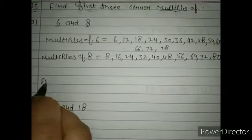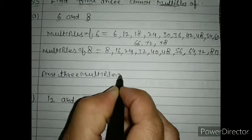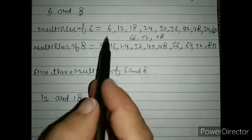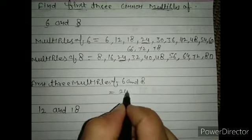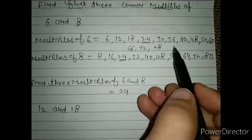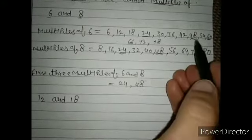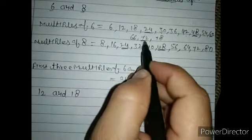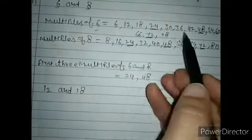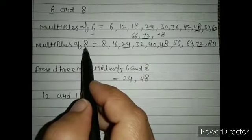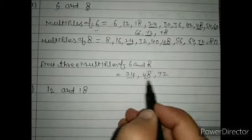Checking the multiples of 6 and 8: 6 is not common, 12 is not common, 18 is not common — but 24 is common. Next, 48 is also common. Continuing the tables, 72 is also common. So the first three common multiples of 6 and 8 are 24, 48, and 72.